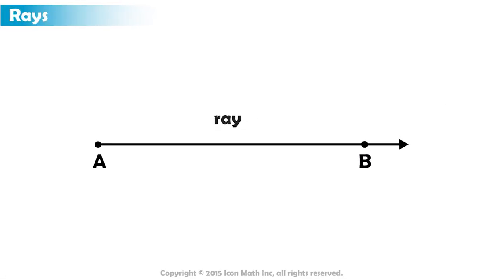We call this a ray, and we name it Ray AB. The arrow over the two letters indicates it is a ray, and the arrow's direction indicates that A is the end point where the ray starts.